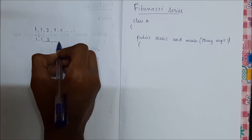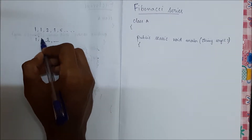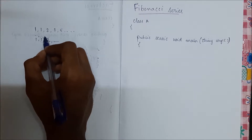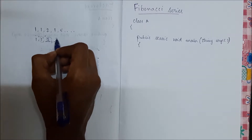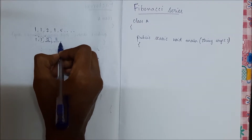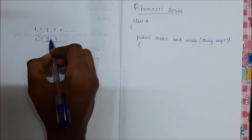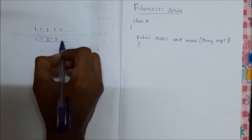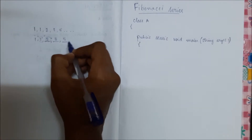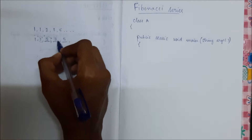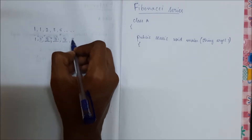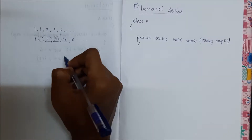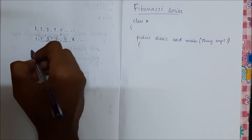The next term is the sum of the previous two terms, so two plus one gives us three. Then the next term is the sum of those two terms, so it will be five. After that, the next term is the sum of these two terms, which is eight, and it keeps on going.